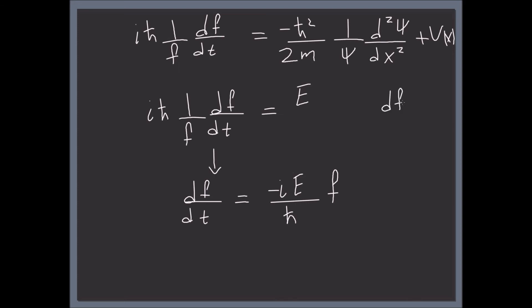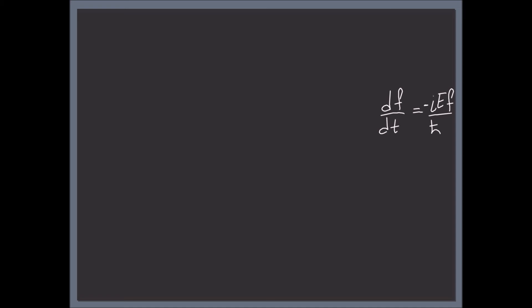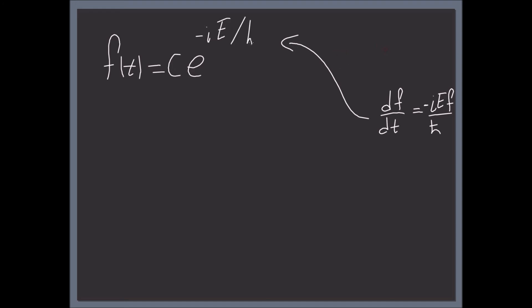Let's go ahead and solve dF/dt = −(iE/ħ)·F. One time derivative equals a constant times the function itself, so we can assume a solution F(t) = C·e^(−iEt/ħ). If we plug it back in and take one time derivative, we get C·(−iE/ħ)·e^(−iEt/ħ).